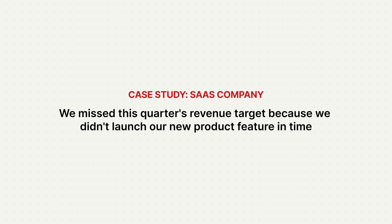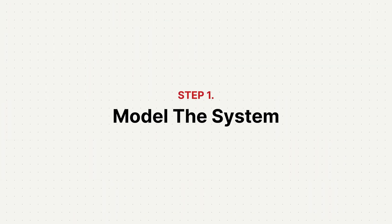To bring it to life, we're going to use an example: we missed this quarter's revenue target because we didn't launch the new product feature in time. So with that, let's jump into the five-step process. Things never happen in isolation, so the very first thing you should do is map out the stages, processes, or connections between the things you're looking at.